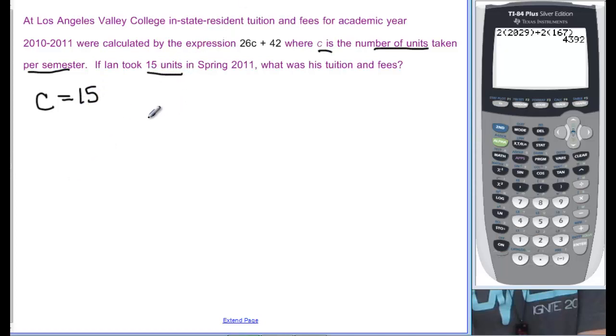So when we rewrite this problem, we have 26 times 15, the number of units, plus 42. And again, I'm just going to go right over here to my calculator. 26, parenthesis 15, close the parenthesis, exactly like I see it. I don't really have to have those parenthesis, but it doesn't hurt. And that's equal to 432. And what was his tuition and fees? That means it's in dollars, so this would be 432 dollars.